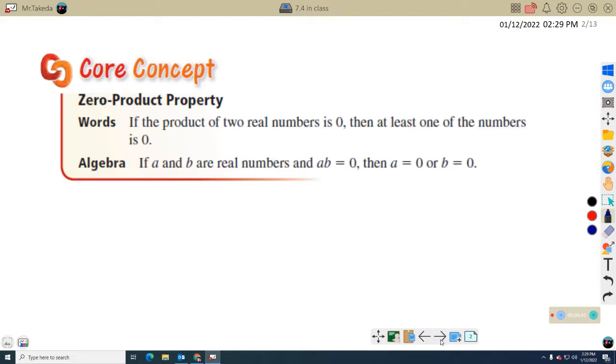The zero product property, this is something you kind of already know. Essentially, if the product, if you multiply two numbers together, and the result is zero, then at least one of those numbers has to be zero. So for example, in algebra, we're going to say A times B equals zero, then either A equals zero or B equals zero.